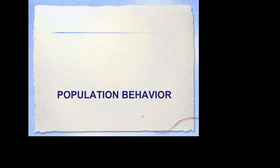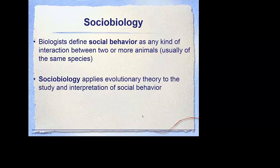So far we've only looked at individual types of behaviors. What I want to focus on now is what happens when a population behaves in a particular way, and particularly as a unit. This is something known as sociobiology. In sociobiology, or social behavior, we use evolutionary theory to explain how a population behaves, and what we look at is that these behaviors are adaptive — meaning that evolution is selecting for them.